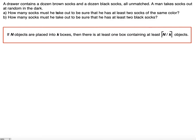A drawer contains a dozen brown socks and a dozen black socks, all unmatched. A man takes socks out at random in the dark. Part A: How many socks must he take out to be sure that he has at least two socks of the same color?